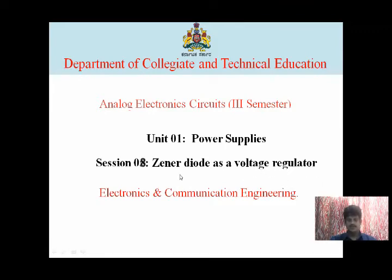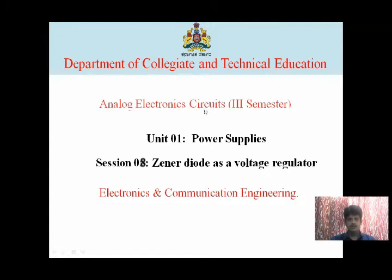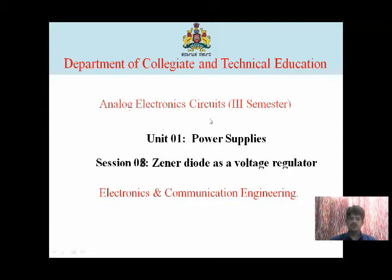Before starting, we'll revise the topics covered in the previous class. We discussed about the regulator — what is the need of a regulator, line regulation, and load regulation. Regulators are mainly classified into two types: linear regulators and switching regulators. In the linear regulator we have two types: series linear regulator and shunt linear regulator. In switching regulators we have three types: buck, boost, and buck-boost switching regulators.